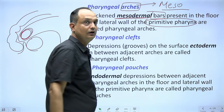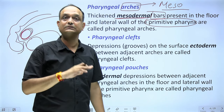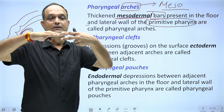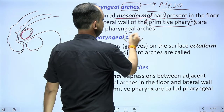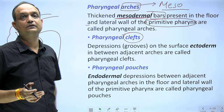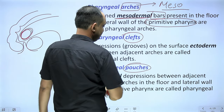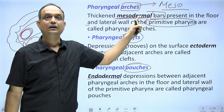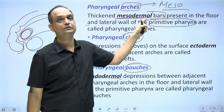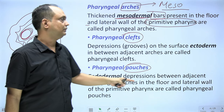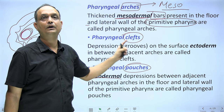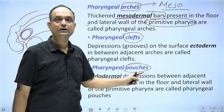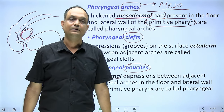The mesodermal bars are lined on the outer side by ectoderm and on the inner side by endoderm. Between two bars externally, there is a depression known as a cleft, lined by ectoderm. Internally, between two arches, there are pouches lined by endoderm. So: arches = mesodermal derivatives, clefts = ectodermal derivatives, pouches = endodermal derivatives.